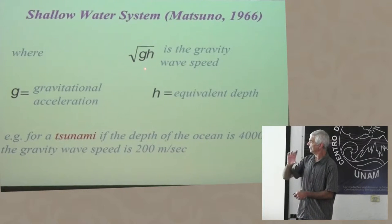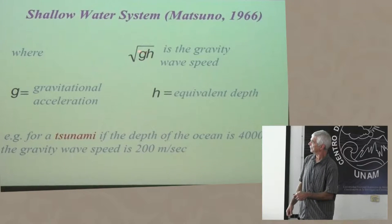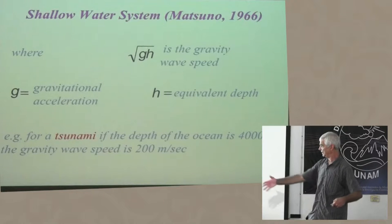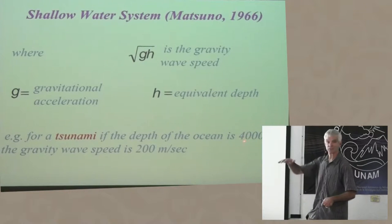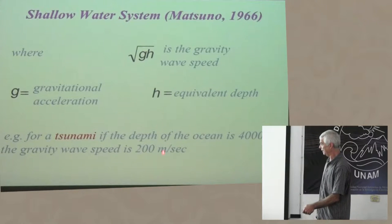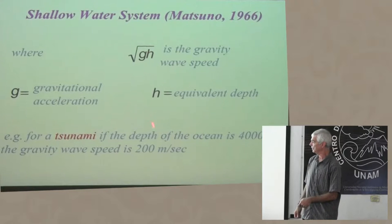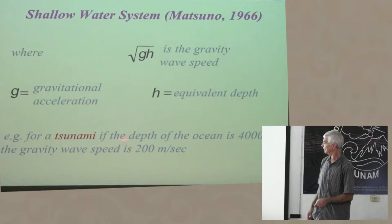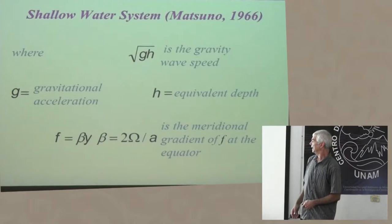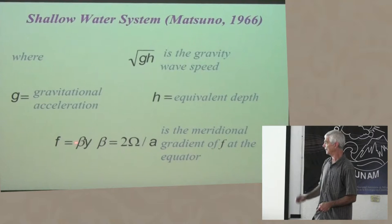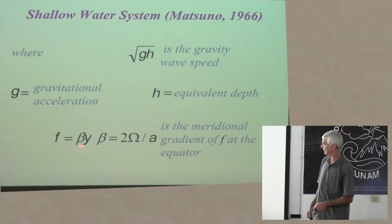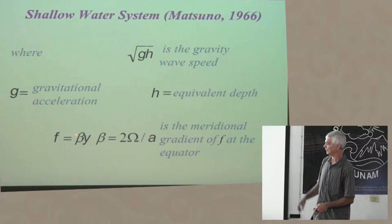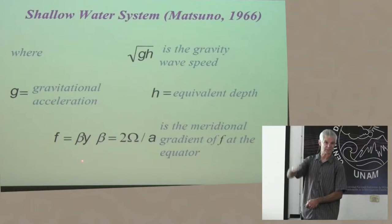On the beta plane, f is set to the value of beta — the meridional gradient of f at the equator — times the latitude. This works very well for the equatorial region. The other part has to do with the gravity wave speed, which in a shallow water system is simply related to the depth of the fluid. This works well for waves that are long compared to the depth of the fluid.